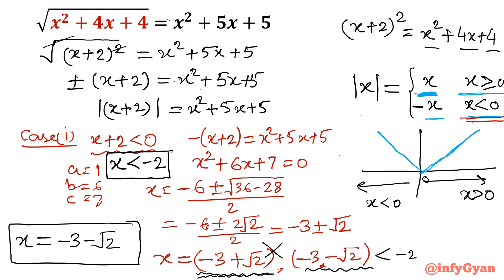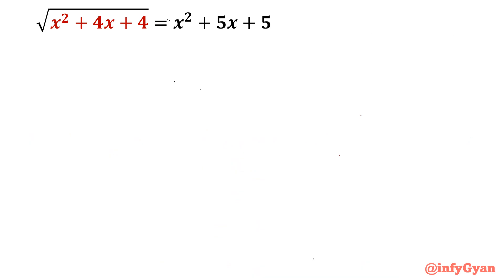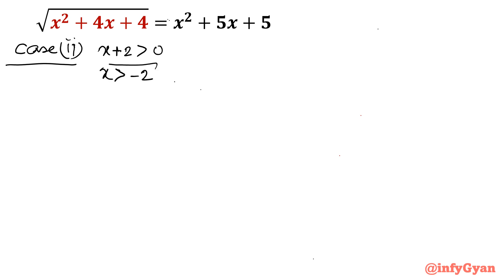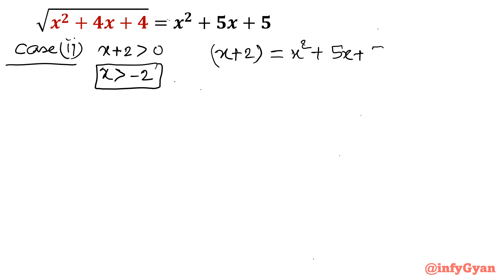Now Case 2: where x + 2 > 0, in other words x > -2. Once x + 2 > 0, the left side is simply x + 2. So the equation becomes x + 2 = x² + 5x + 5. Taking all terms to one side: x² + 4x + 3 = 0.